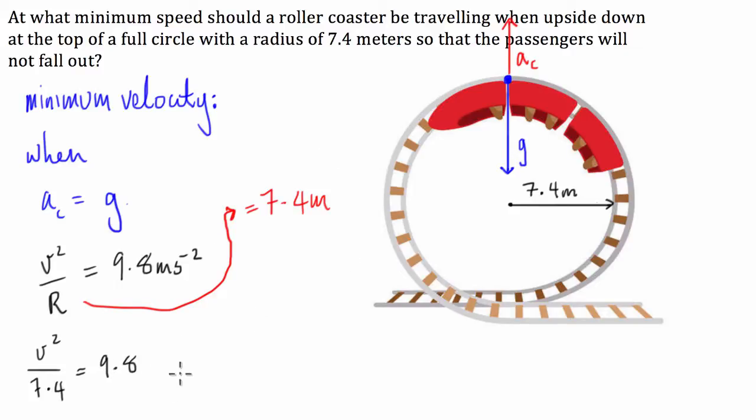Okay, we have a little bit of simple algebra. We can say the velocity is going to be equal to the square root of 9.8 times 7.4. Which is equal to 8.52 metres a second.